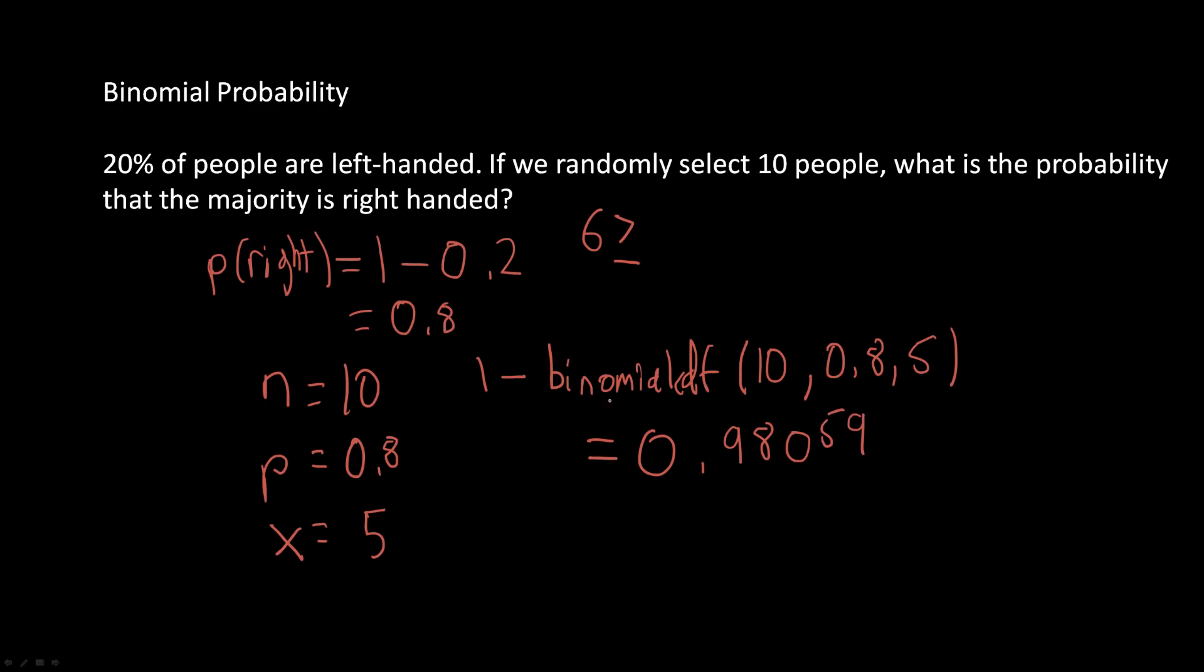So what we did here is we did 1 minus the probability that 5 out of 10 people are right-handed plus the probability that 4 out of 10 preceding it. So the only thing left after subtracting it from the probability of 1 would be the probability that the majority is right-handed from 6 out of 10 to 7 out of 10 to 8 out of 10 to 9 out of 10 to 10 out of 10, which means that you can just subtract it by 1 minus the binomial CDF in order to find the answer.